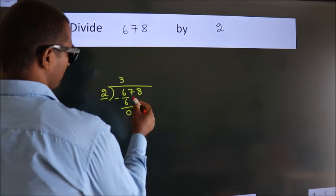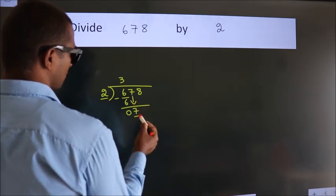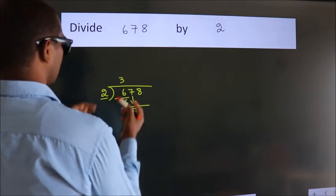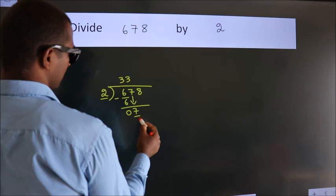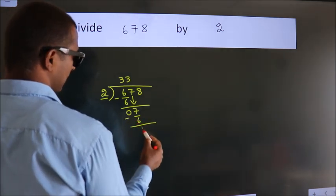After this, bring down the beside number. So 7 down, so 7. A number close to 7. In 2 table is 2, 3 is 6. Now we subtract. We get 1.